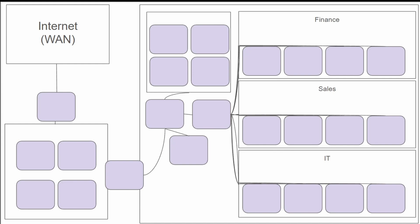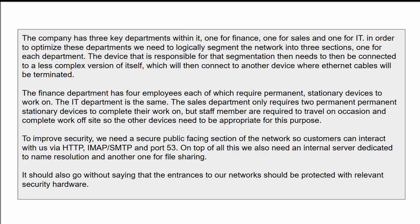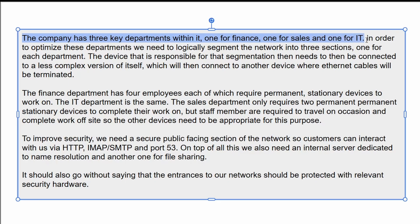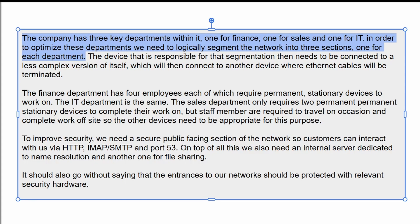So essentially this is going to require us to know what different devices do, and based on the requirements given, which device should we select? Let's get straight into our written description. It starts by saying the company has three key departments: one for finance, one for sales, and one for IT. In order to optimize these departments, we need to logically segment the network into three sections, one for each department. Let's pause right here and take it one step at a time.